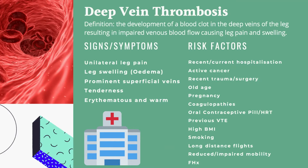In terms of the signs and symptoms a patient may have, unilateral leg pain is quite common and is usually described as a throbbing or cramping pain, or almost like a dull ache, particularly bad when walking or bearing weight on the affected limb. Leg swelling, edema, prominent superficial veins, tenderness, erythema and warmth are also signs you may see when you examine the patient.